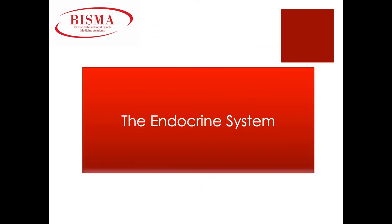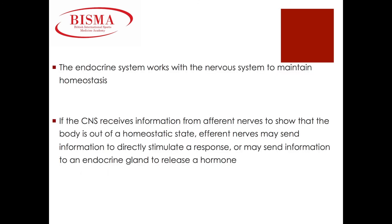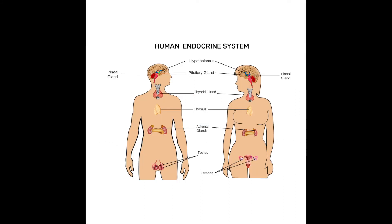The endocrine system works very closely with the nervous system to maintain balance or homeostasis within the body. If the central nervous system receives information from an afferent nerve showing that the body is out of a balanced state, an efferent nerve may send information directly to stimulate a response, or it may send information to an endocrine gland to release a hormone. Remember, hormones are chemical messengers within the body.